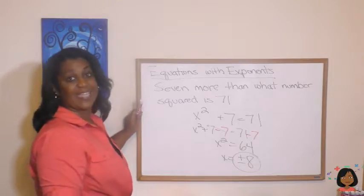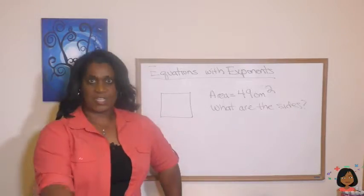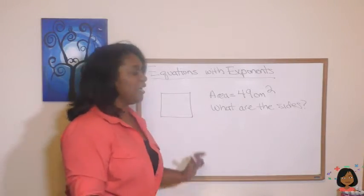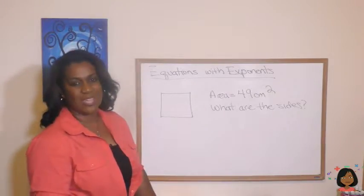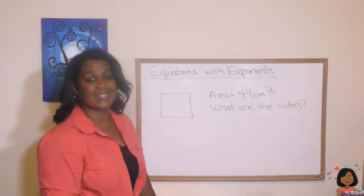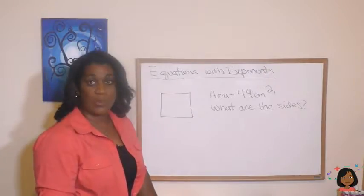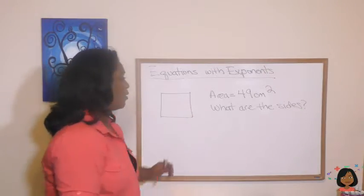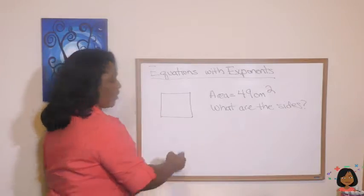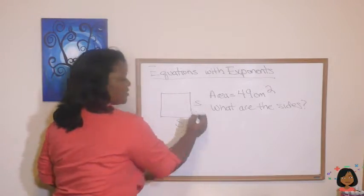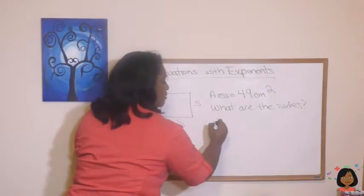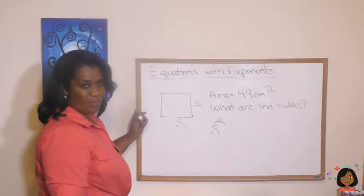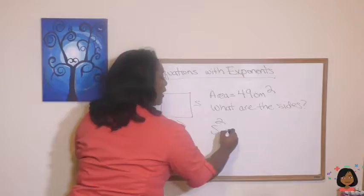Take a look at this example. Here we have a square. What if the area, I told you the area of the square is 49 centimeters squared, but I don't know what the sides are, and I asked you find the sides? Well, we know the formula for the area of the square is side times side, right? Well, side times side is the same thing as saying side squared, and our area comes out to 49.